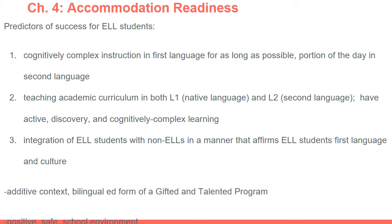Now let's talk about chapter four: accommodation readiness. There are many predictors of success for English language learners. The first predictor is that students are receiving cognitively complex instruction in their first language for as long as possible — this could be having a portion of the day in their first language and another portion in their second language, or developing strong content knowledge through their first language in a bilingual classroom.